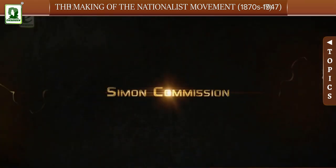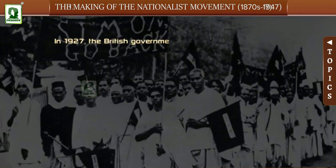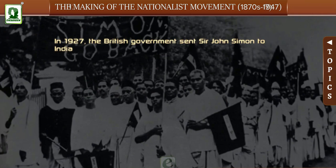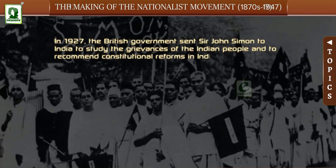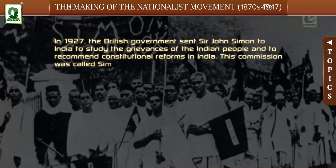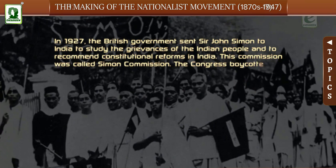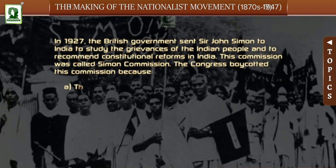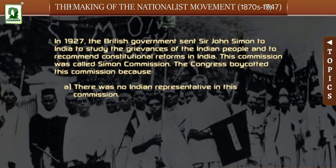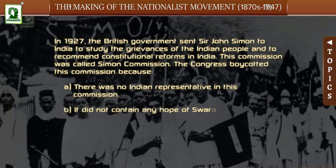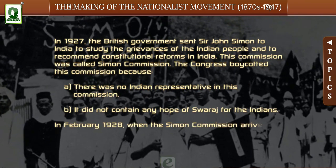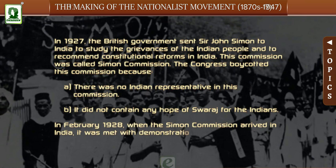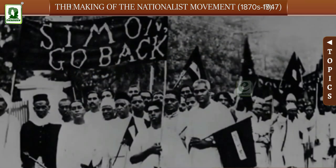Simon Commission: In 1927, the British government sent Sir John Simon to India to study the grievances of the Indian people and to recommend constitutional reforms. This was called the Simon Commission. The Congress boycotted it because there was no Indian representation in the commission and it did not contain any hope for Swaraj for the Indians. In February 1928, when the Simon Commission arrived in India, it was met with demonstrations and banners saying 'Simon, Go Back.'